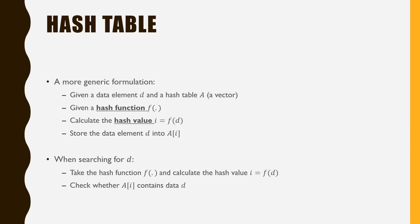More formally, consider that we are given a data element d and a hash table a, which is simply a vector in this case. We are also given a hash function f that accepts the data element d as input. We apply the function f to the input data d and obtain the output i as the hash value for d. Finally, we insert the data d to the i-th position of the hash table a.